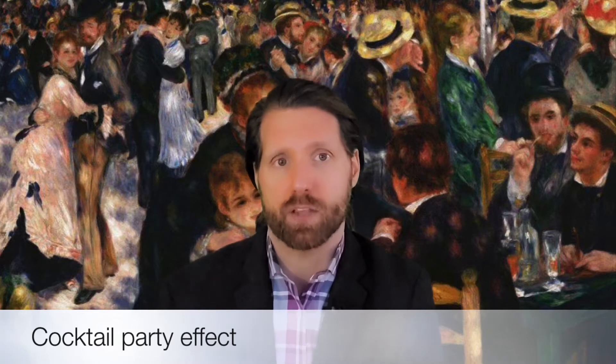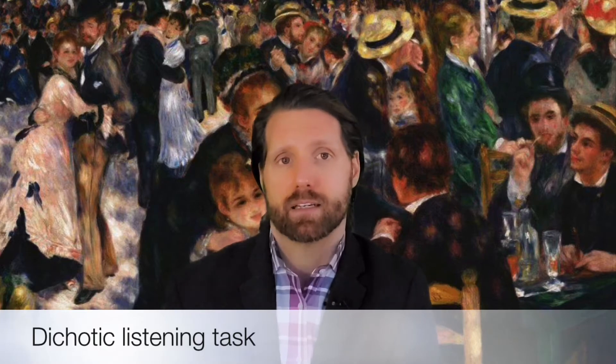This situation is known as the cocktail party effect, and it raises two questions. One, how were you able to block out all that noise while understanding what your friends were saying? And two, how were you able to then recognize your own name being mentioned at the other table when you have no recollection of anything that was said leading up to your name? In other words, what was your mind doing with that conversation at the other table that allowed you to hear your name in the first place?